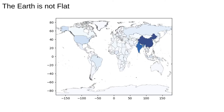The map we showed at the end of the previous videos looked a bit weird. The reason for this is because we've tried to map latitude and longitude, which are coordinates on a globe, onto a flat plane, which is impossible to do perfectly. This video will discuss what we do about the fact that the Earth is not flat.